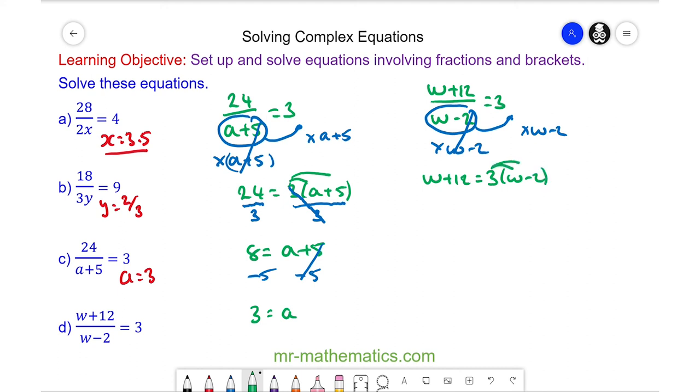I'm going to expand the brackets out this time. So we have w plus 12 is equal to 3w minus 6. At the end of the solution, I want w on its own.